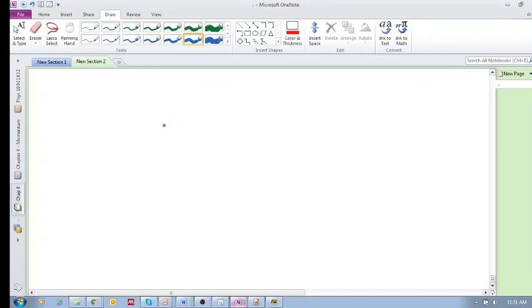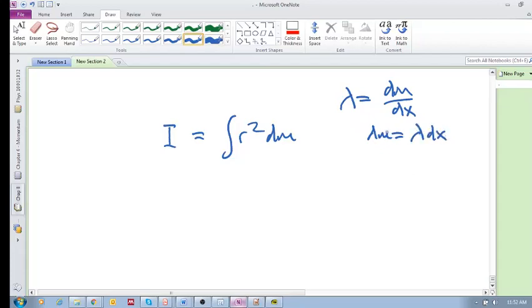We know that rotational inertia is I = r²dm, and lambda is dm/dx. So dm is lambda dx, and if we plug this in, we get I = ∫r²lambda dx.